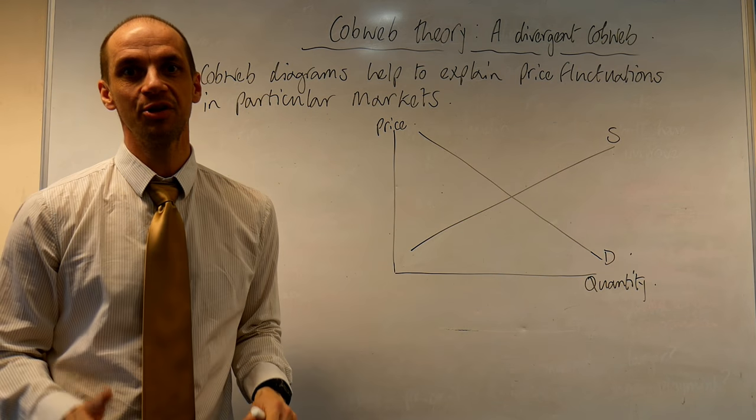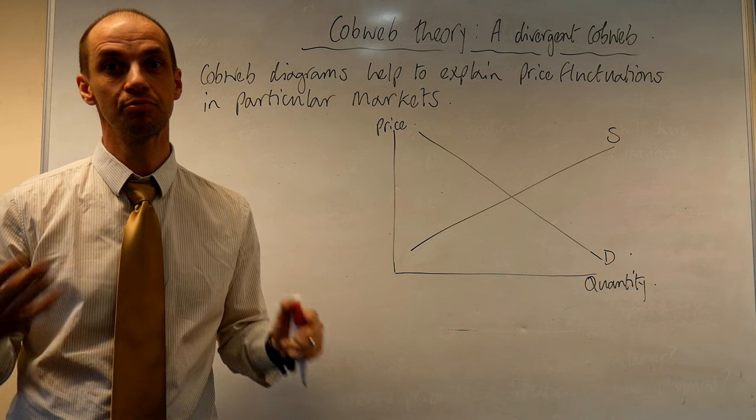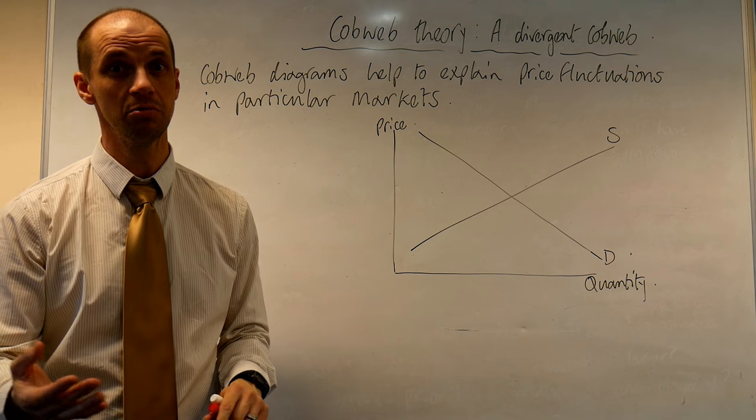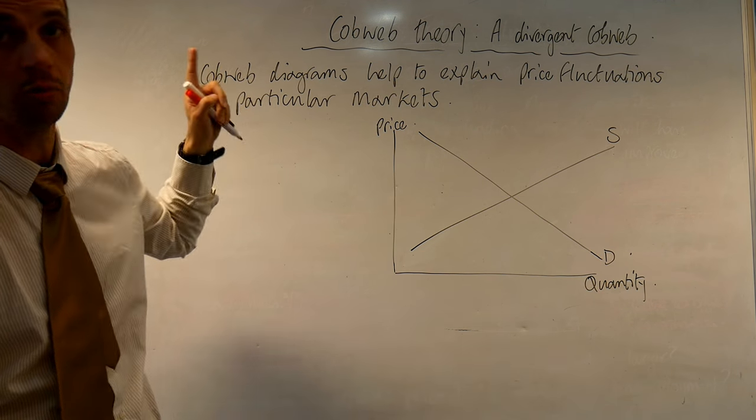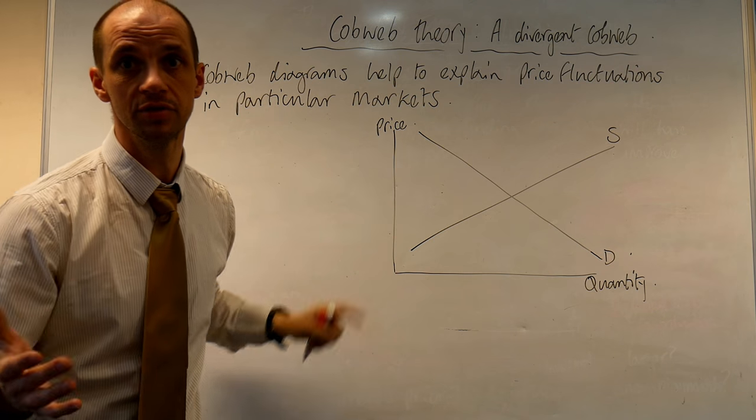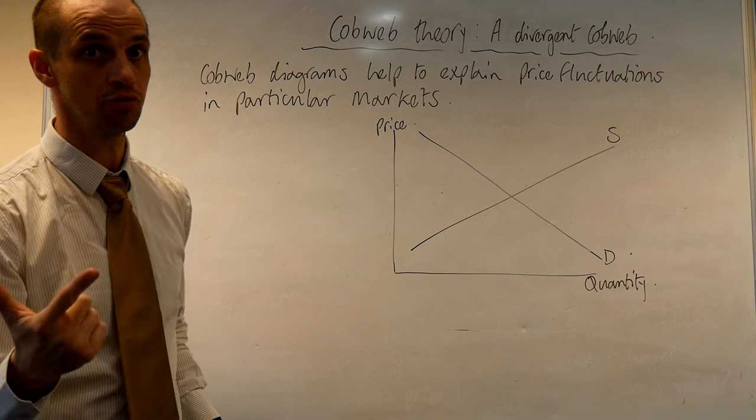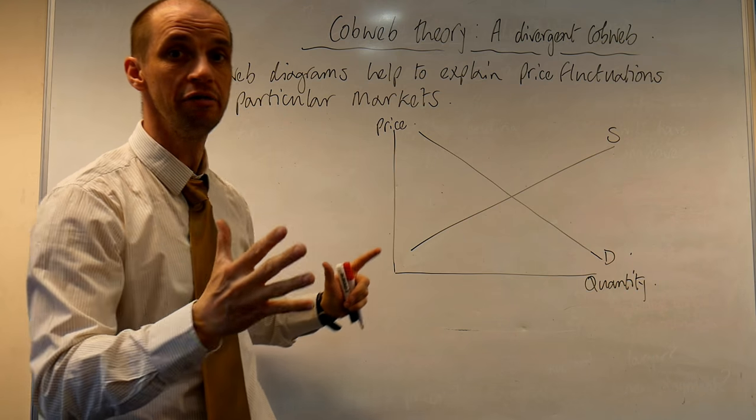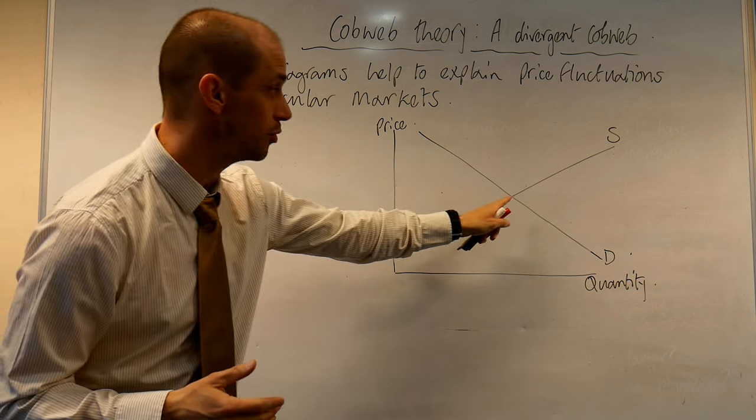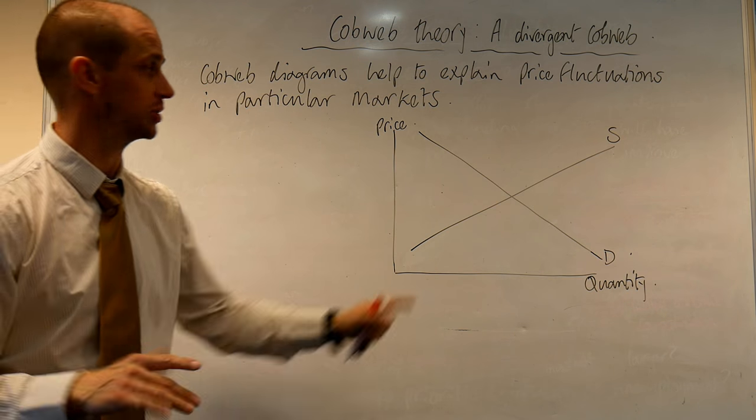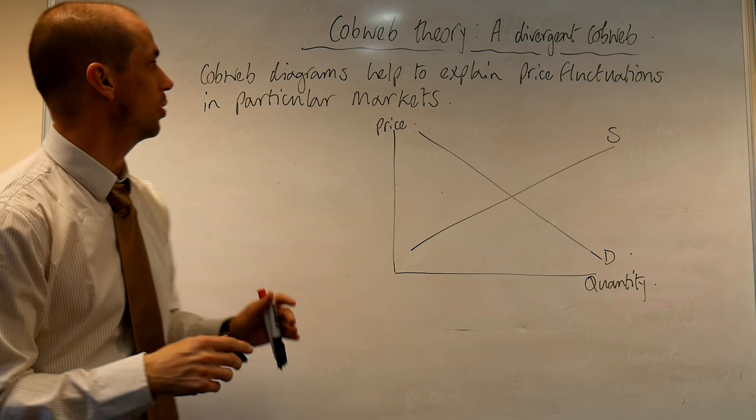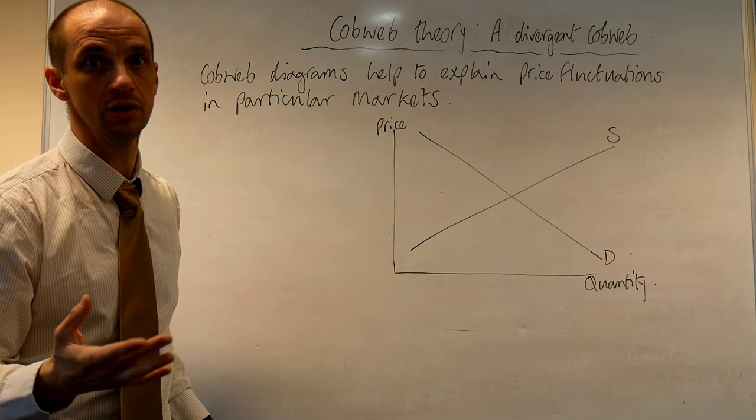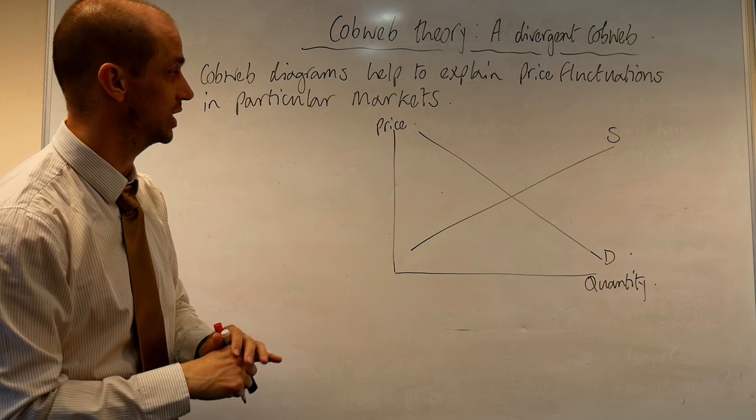Hi everyone. Let's now understand price volatility and price fluctuations in given markets. In this session we're going to look at a divergent cobweb. Divergent cobweb is where the actual price diverges away from our equilibrium price that we normally expect where supply equals demand. This means that we have a lot of price volatility as a direct result of this.